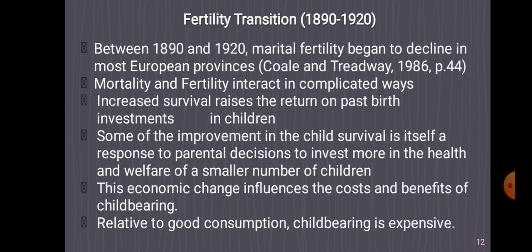During the Fertility Transition of 1890-1920, we hoped that many children could survive because we had improvements in survival — we now have medicines that can be given to children. This is also the time when contraceptive efforts started in order to limit the number of children, which accounts for this decrease.